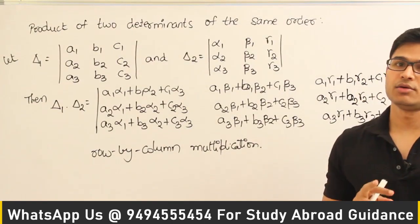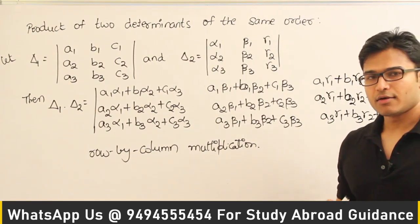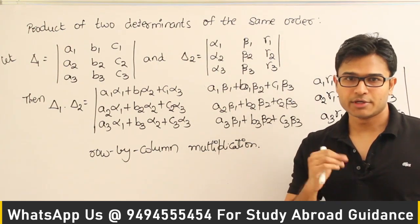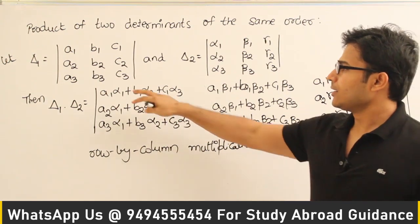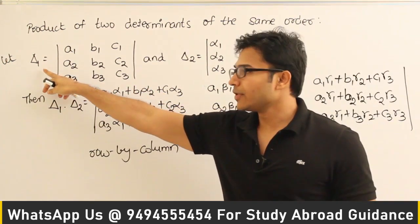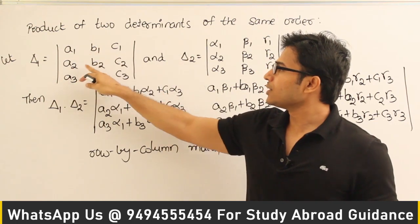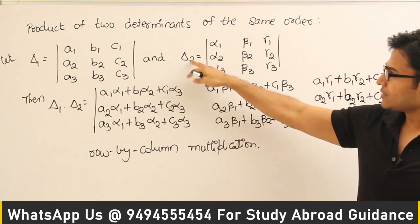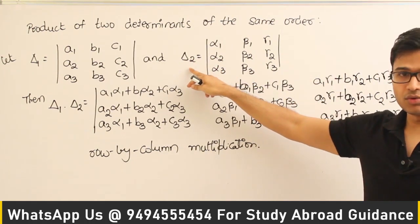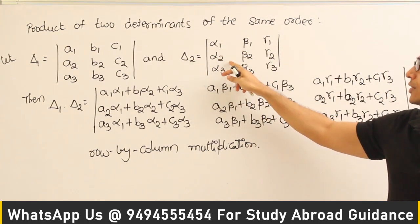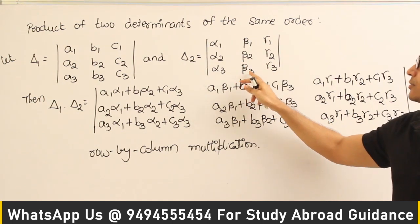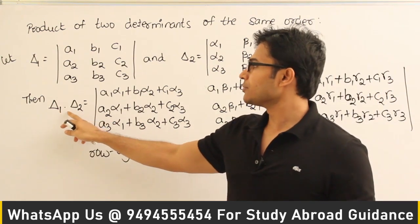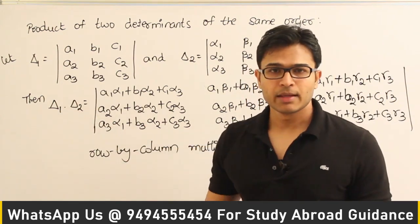Let's see how to multiply two determinants, just like how we multiply two matrices. If this is one determinant, let's call it delta 1: a1 b1 c1 / a2 b2 c2 / a3 b3 c3. And this is the other determinant, delta 2: alpha1 beta1 gamma1 / alpha2 beta2 gamma2 / alpha3 beta3 gamma3. I want to multiply these two determinants delta 1 and delta 2.